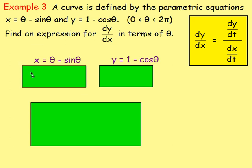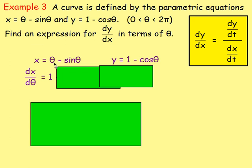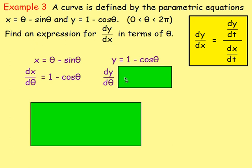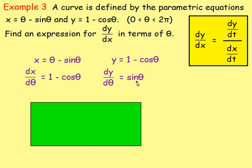Differentiating x with respect to theta: theta differentiates to 1, just the same way as x with respect to x gives 1. Then take away sine theta — differentiating that gives negative cos theta. So dx/d-theta equals 1 minus cos theta. For y equals 1 minus cos theta: differentiating y with respect to theta, the 1 disappears, and negative cos theta differentiates to positive sine theta.